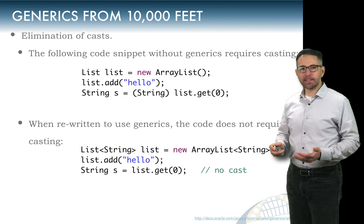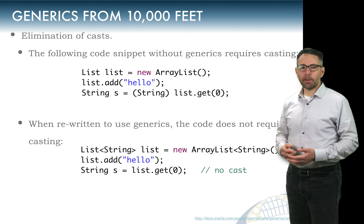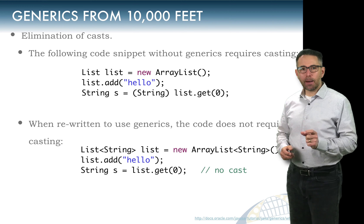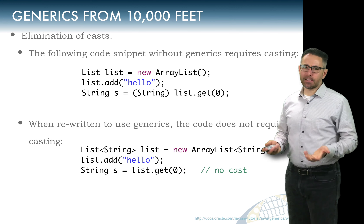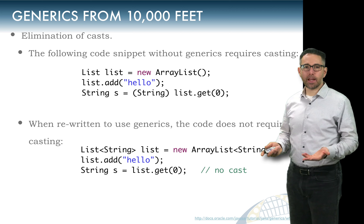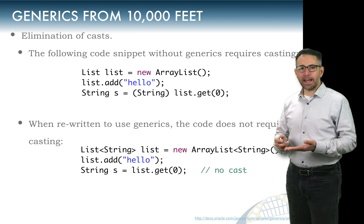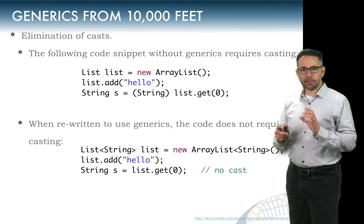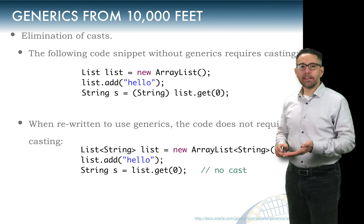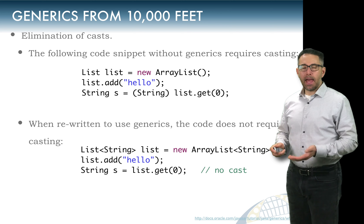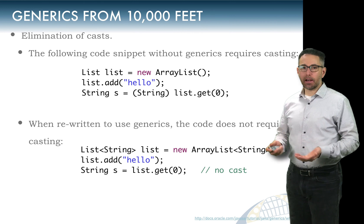We put the word `String` in parentheses — that forces the compiler to assume what's coming back from the list is a String. This is a problem because we don't necessarily know for sure that what's in there is a String. In real software, that third line is often not written close in the source code to those first two lines, so a developer might not be able to guarantee the list contains a String. If you force-cast and it's not a String, you get a runtime error.